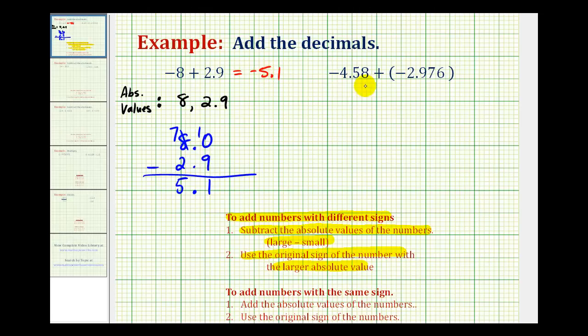In the second example, we're adding two numbers with the same sign, they're both negative. And again, it should make sense if we add two negatives, you can think of this as two losses. The result is still going to be a loss or another negative.